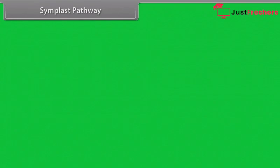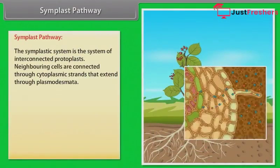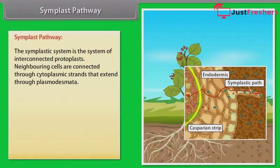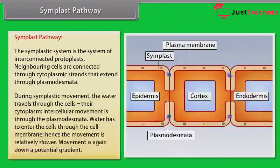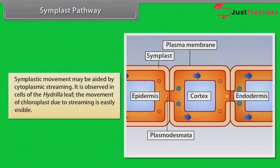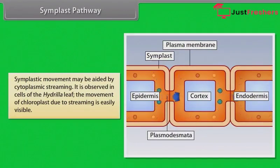The other pathway is the symplast pathway. The symplastic system is the system of interconnected protoplasts. Neighbouring cells are connected through cytoplasmic strands that extend through plasmodesmata. During symplastic movement, the water travels through the cells and their cytoplasm. Intercellular movement is through the plasmodesmata, and water has to enter the cells through the cell membrane, so movement is relatively slower. Movement is again down a potential gradient. Symplastic movement may be aided by cytoplasmic streaming, which is observed in cells of the hydrilla leaf.